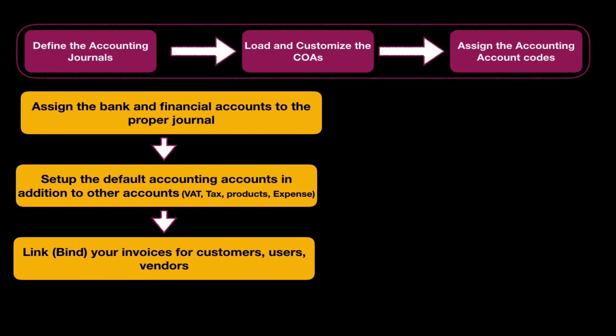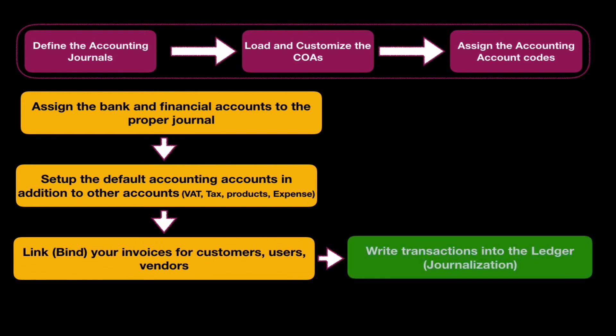After that, we will link invoices. As we saw in the previous lessons, every line of every invoice should be linked to its accounting journal and bound so Doliver can process the financial information and give us our reports. We saw how to do that through the admin menu or the user menu.